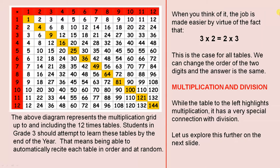When you think of it, the job is made easier by virtue of the fact that 3 times 2 equals 2 times 3. This is the case for all tables. We can change the order of the two digits and the answer is the same.